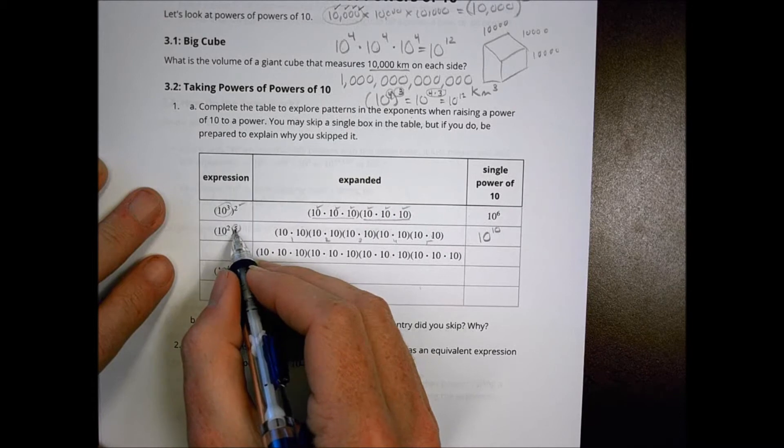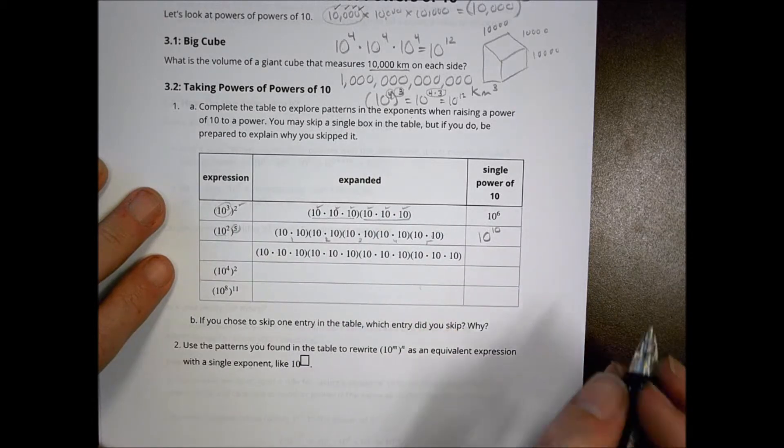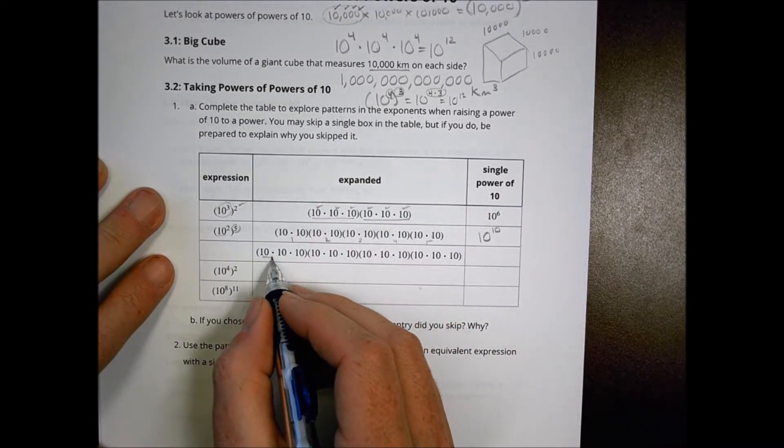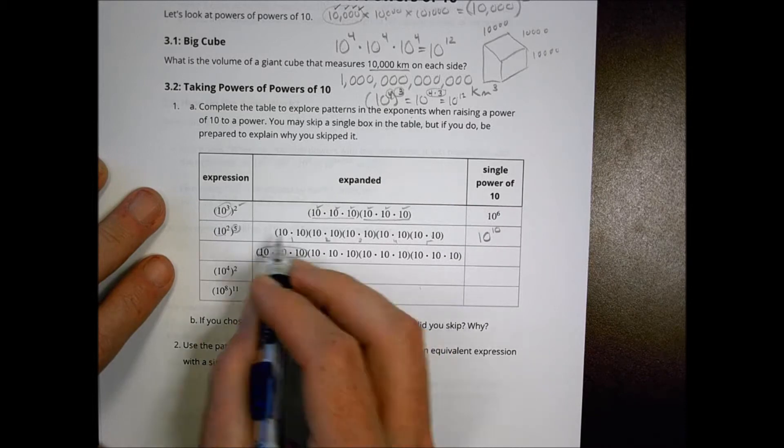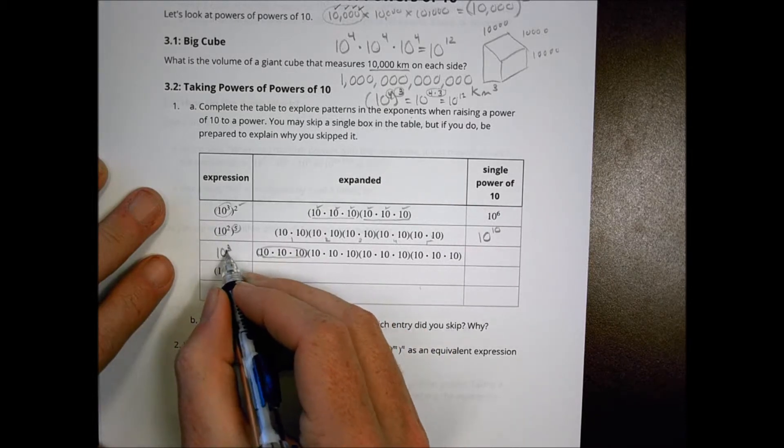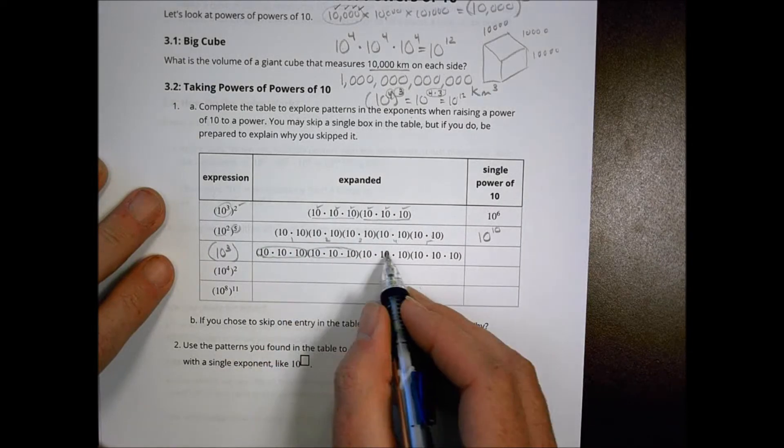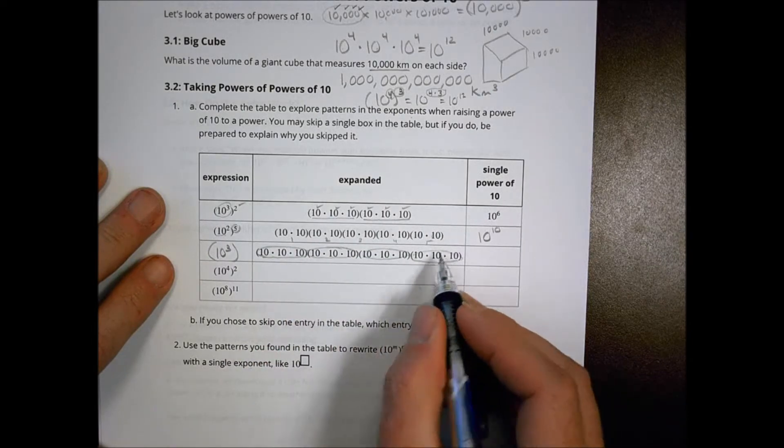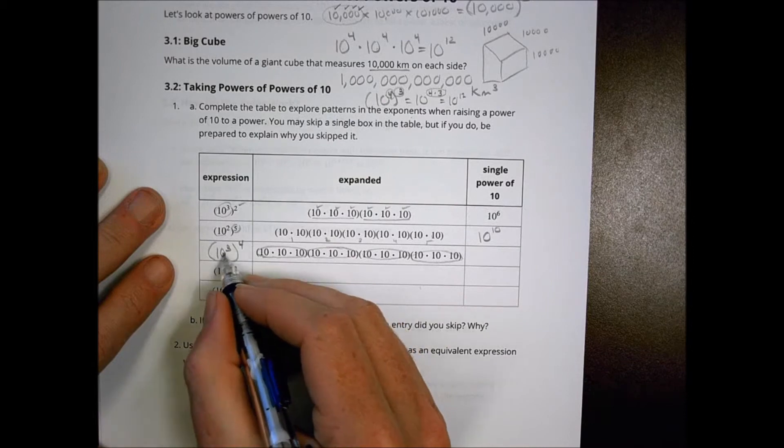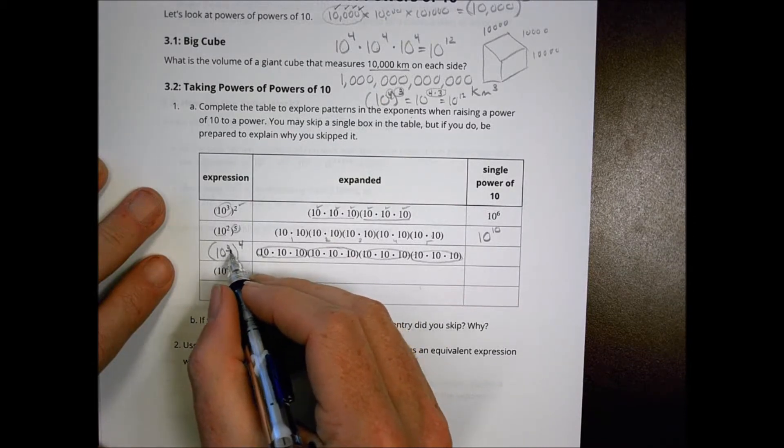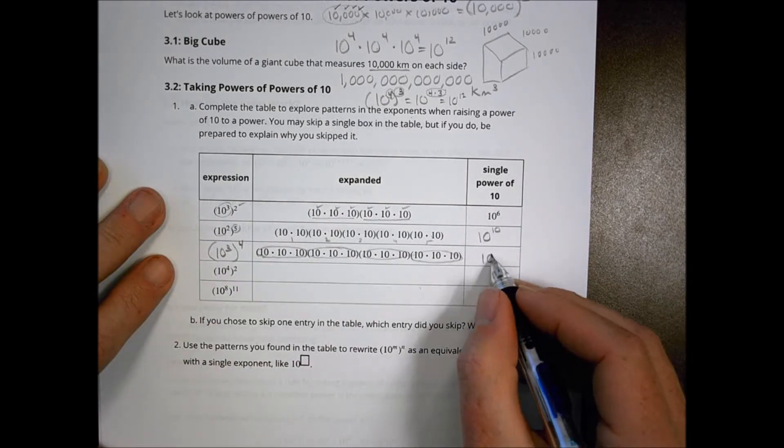Again, 2 times 5 is 10. Here, my grouping is 10 to the third power. But how many of those groups do I have? I have 1, 2, 3, and 4. This is 10 to the third to the fourth power. 3 times 4 is 12.